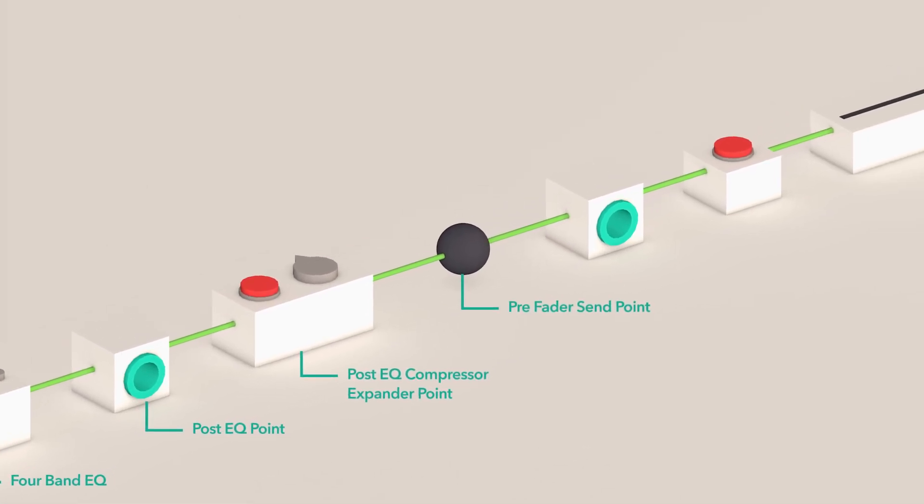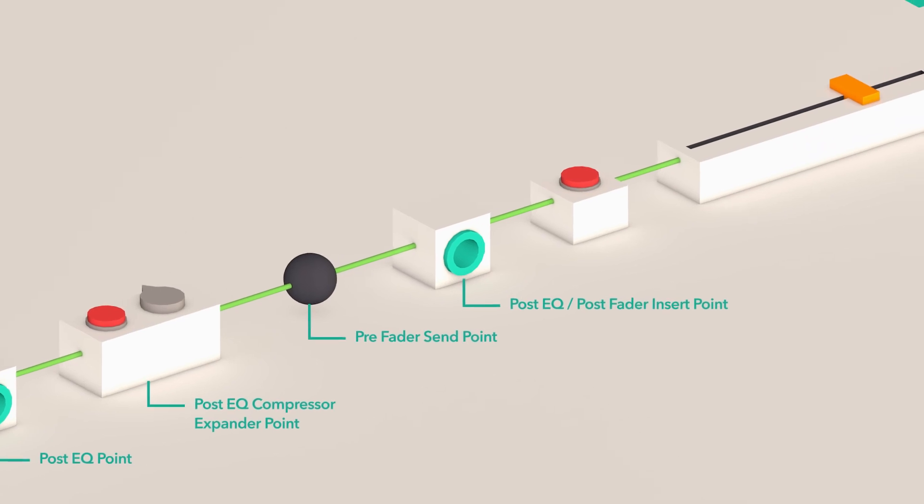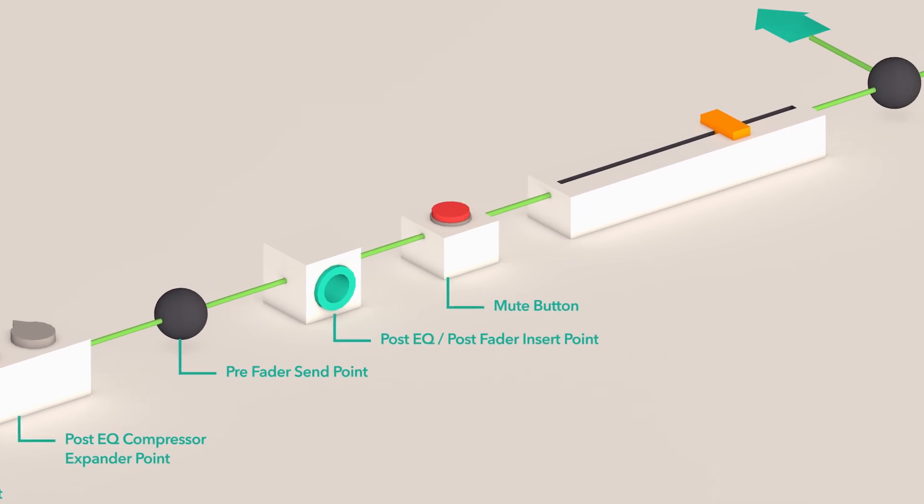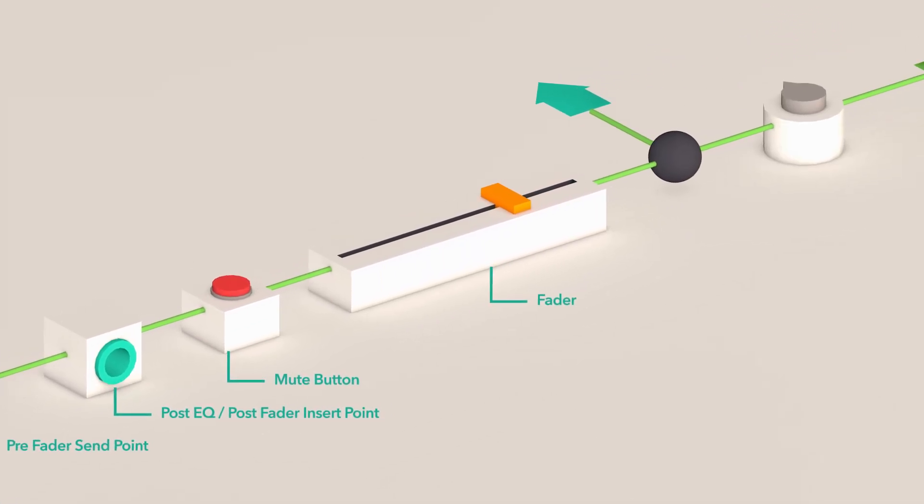The pre-fader send point is where all bus sends will tap the signal prior to the fader. The post-EQ post-fader insert point is where all sends will be affected by the EQ setting and the fader position. The mute button will silence the entire channel. The fader will dictate how much signal is being fed to our routing choices.